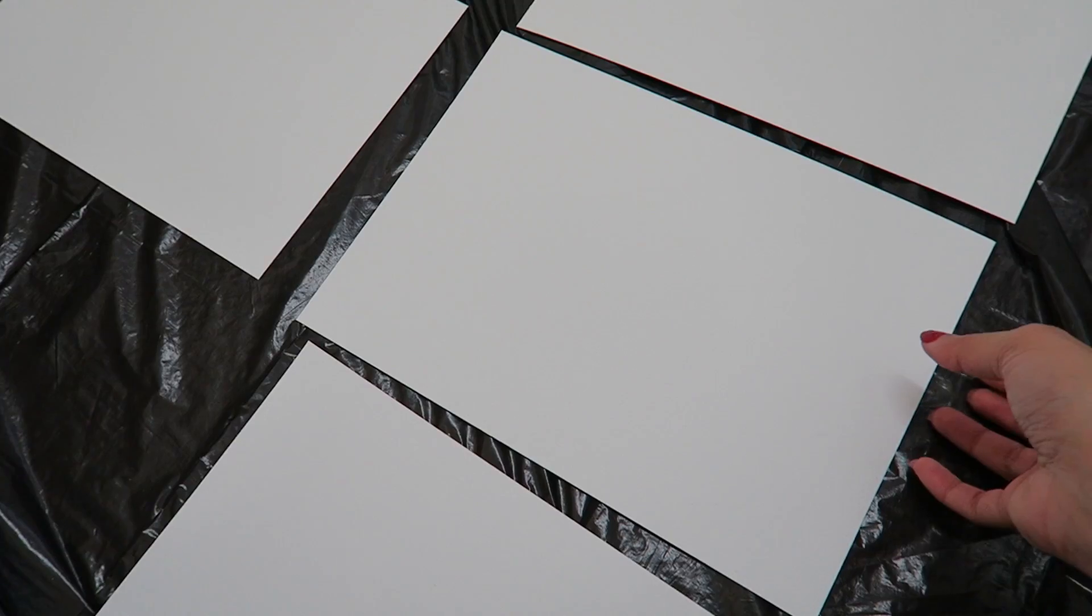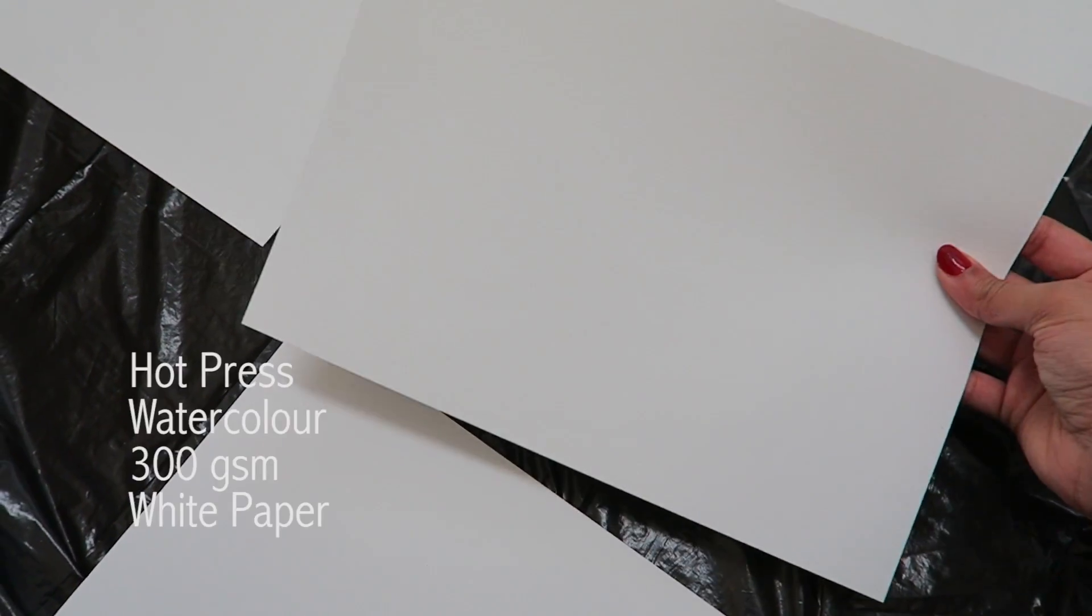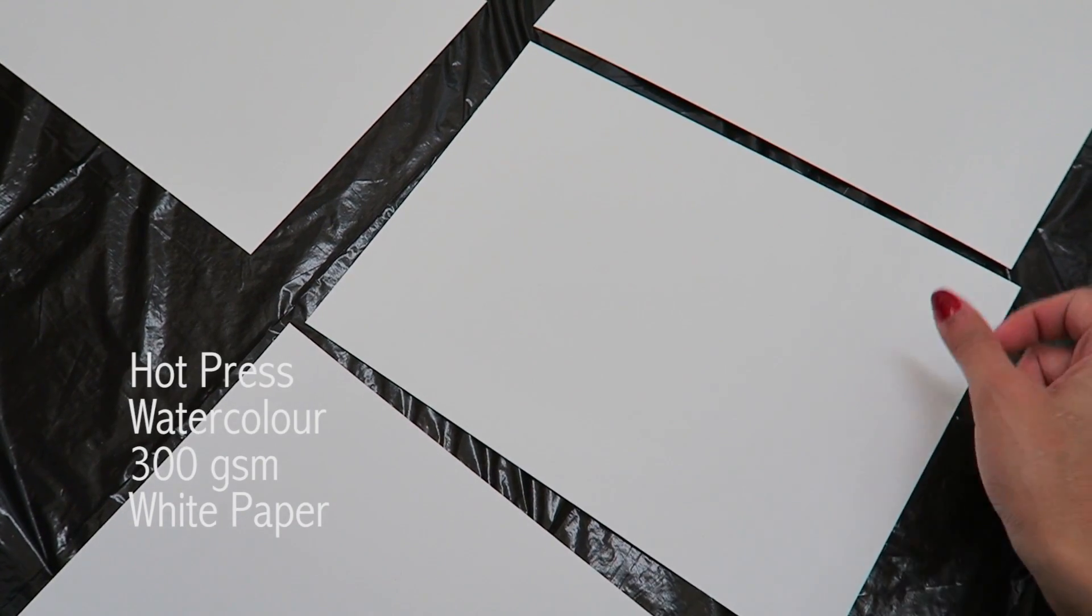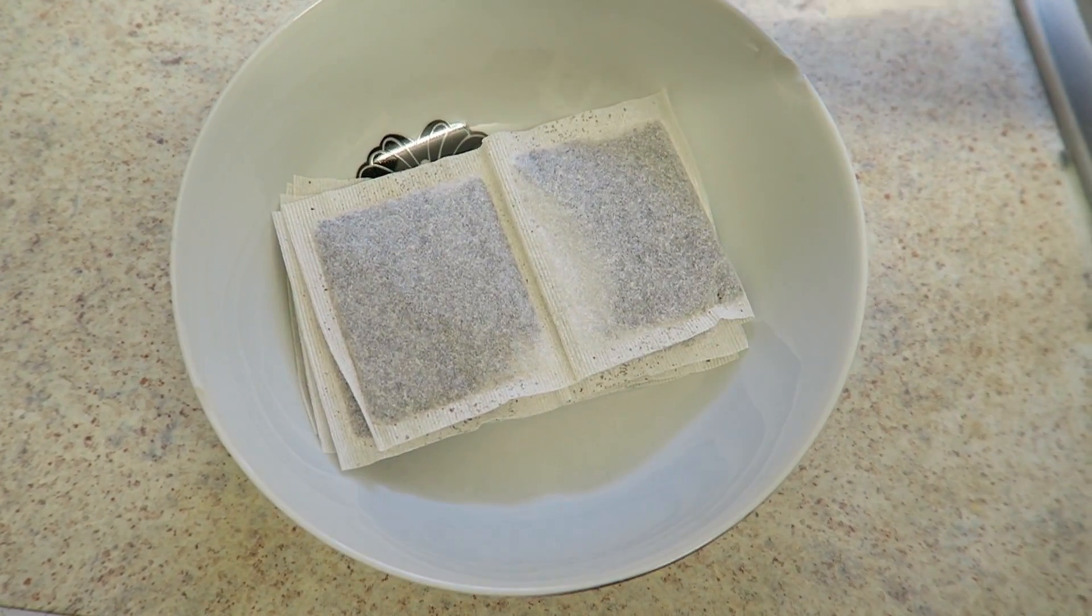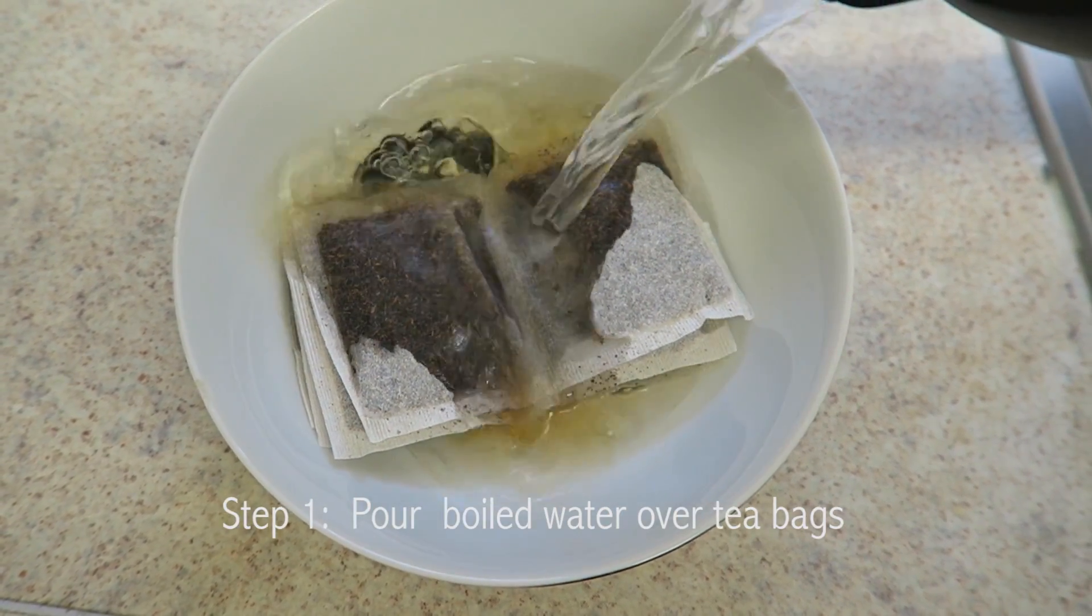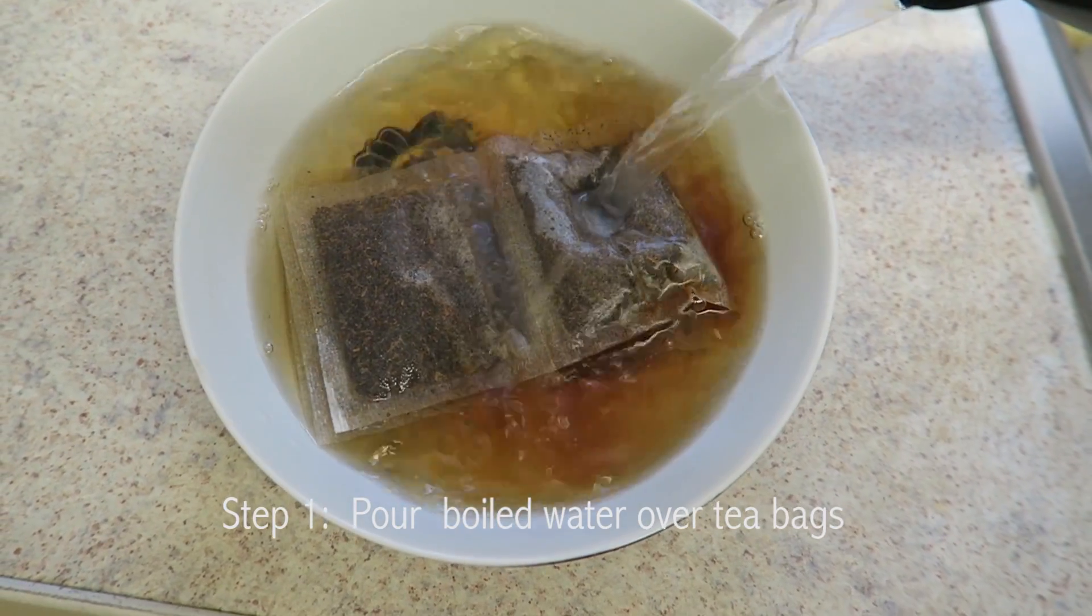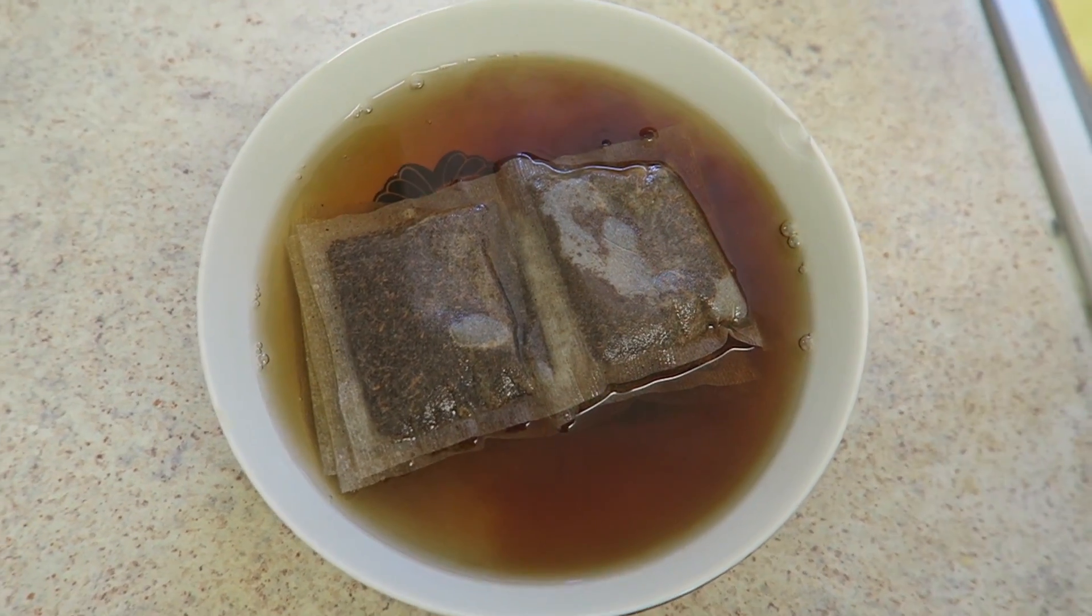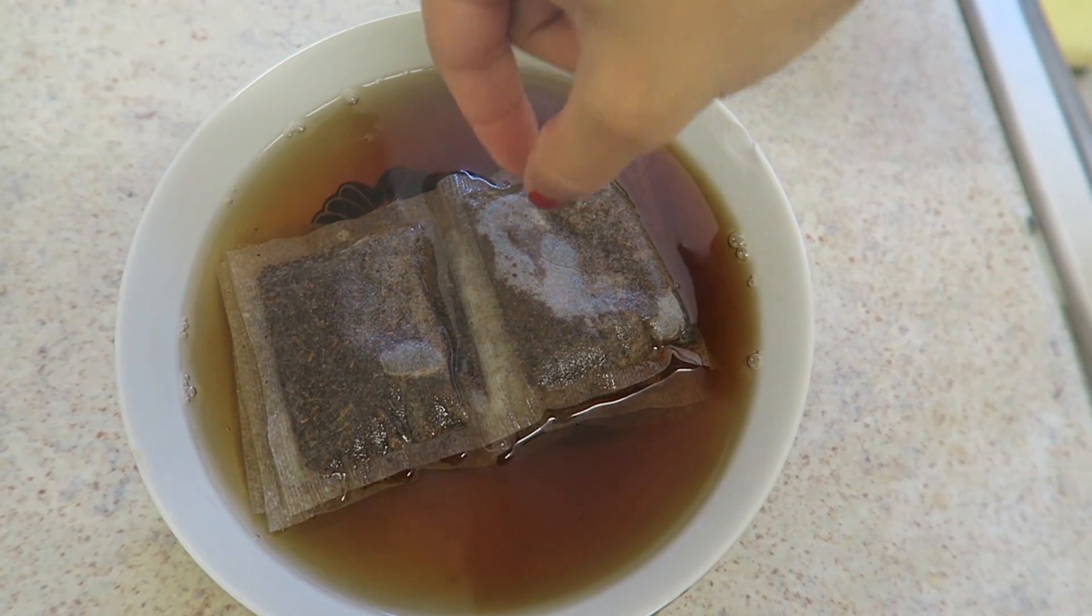Hi everyone, this is a quick tutorial to show you how I prepare my papers before I start the traditional Islamic illuminations. I start with tea staining. After the tea cools down a little, I paint the paper with it.